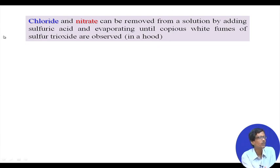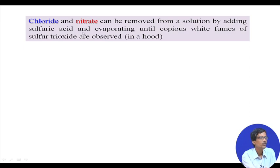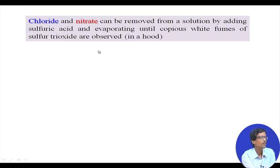In summary, chloride ions and nitrate ions can be removed from any solution in this particular process by adding sulfuric acid and evaporating until copious white fumes of sulfur trioxide are observed. A large amount of SO3 fumes will form; if the beaker is covered, it will be full of sulfur trioxide fume. This should be done in a hood because sulfur trioxide is toxic to health.